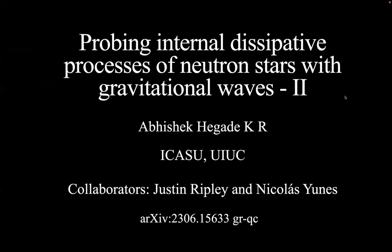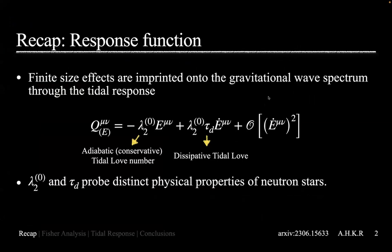To recap: finite size effects of a compact object are imprinted onto the gravitational wave spectrum through its tidal response. In the low-frequency limit, you expand the star's quadrupole moment in terms of an external tidal field and its time derivatives. At zeroth order you have the adiabatic or prompt response, then at first order you get a dissipative response, and then conservative effects at second order. The important property is that lambda_20 and the tidal lag time tau_d both probe distinct physical processes of neutron stars, and so both could be potentially important.